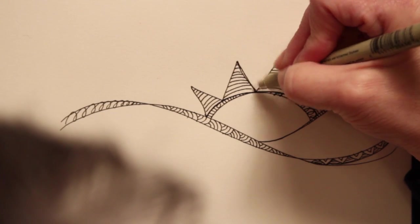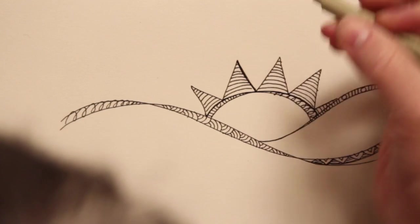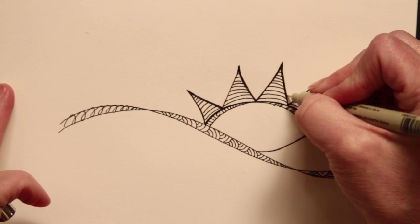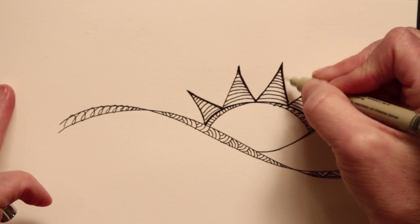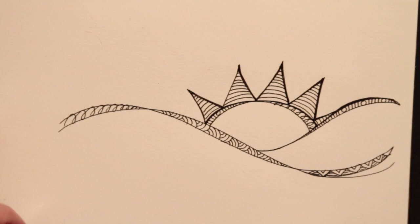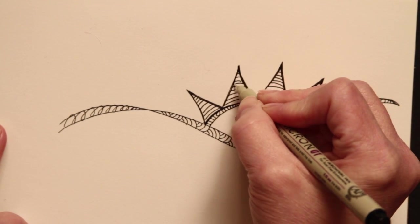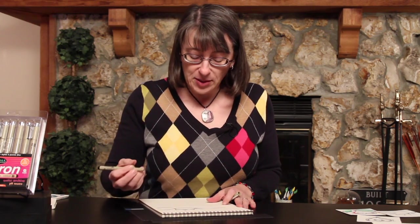For the sun, I think it will look great if we add a little bit of weight to the rays, which will also, once again, hide any mistakes that we happen to have made.